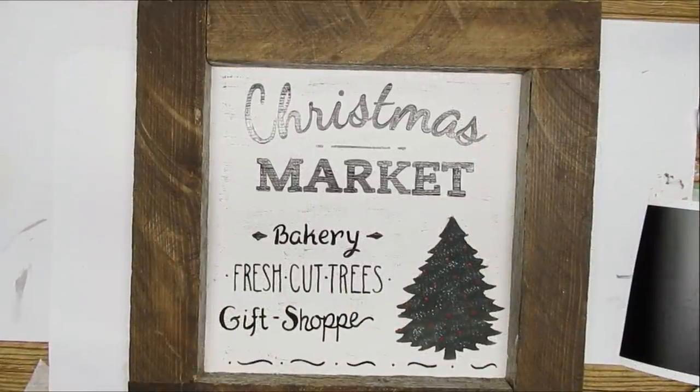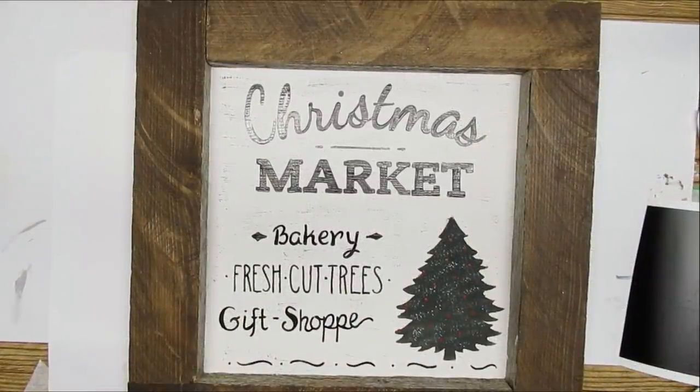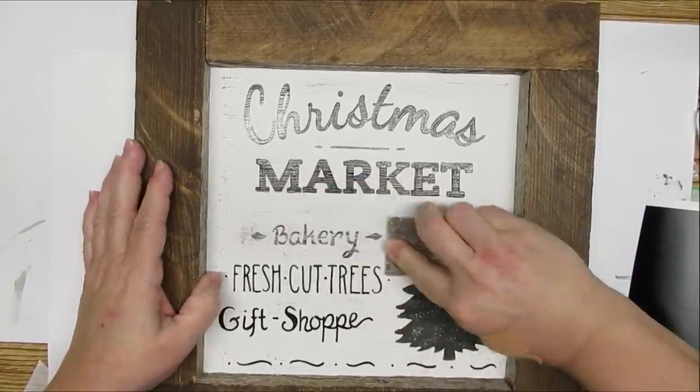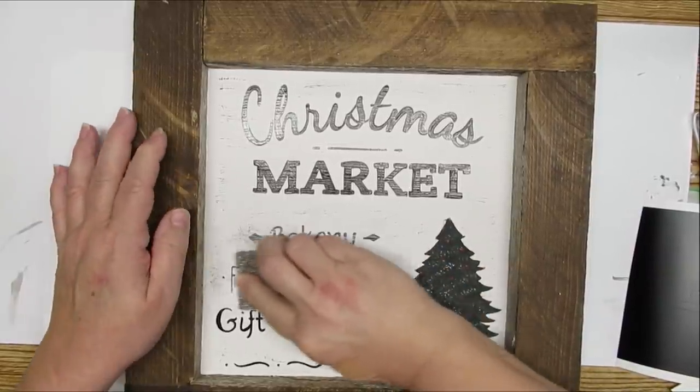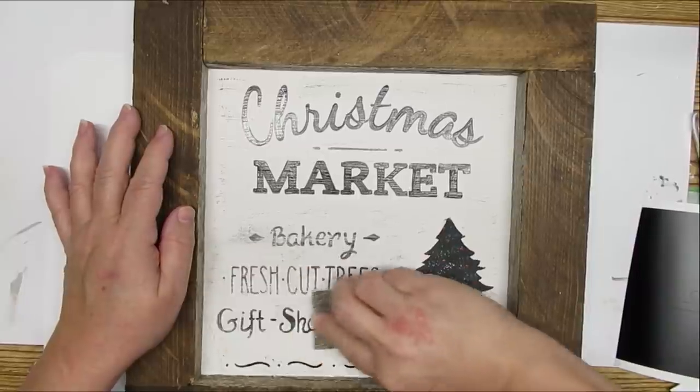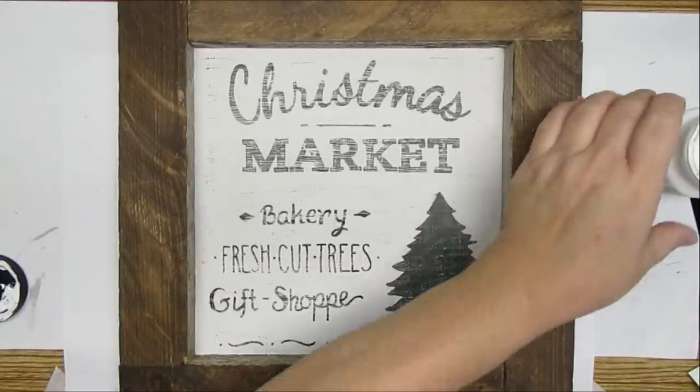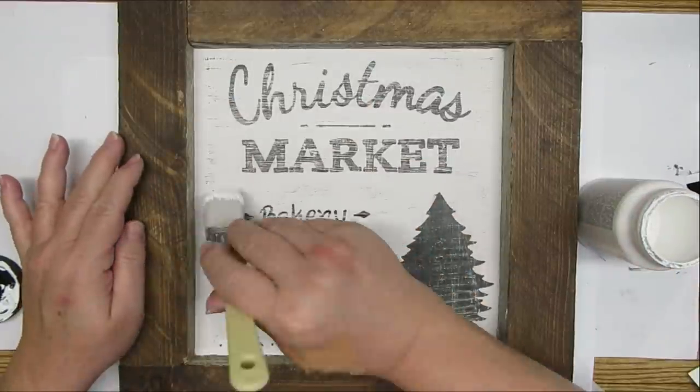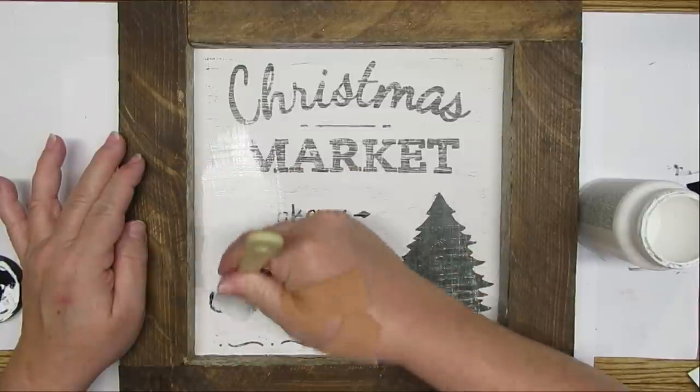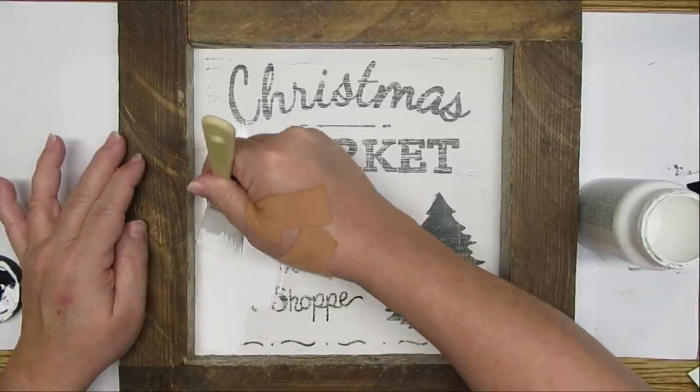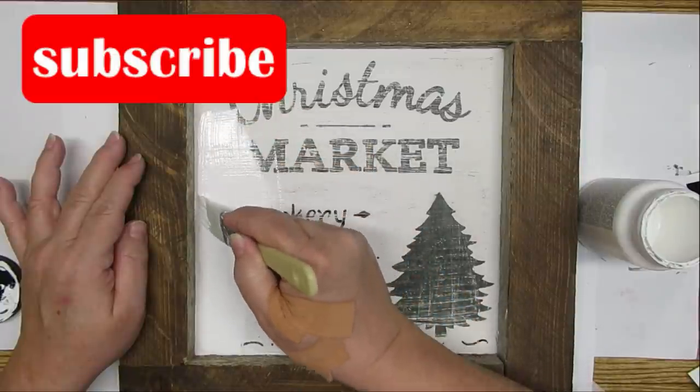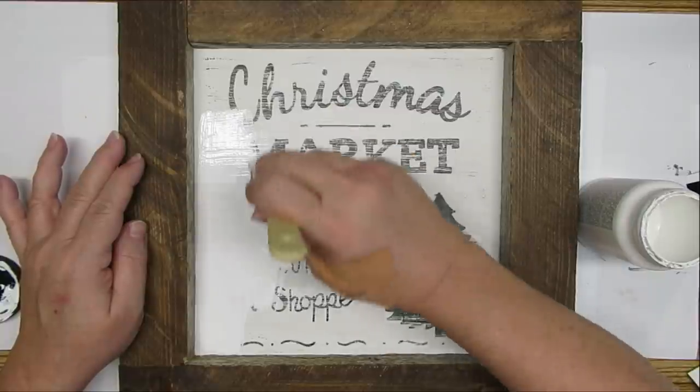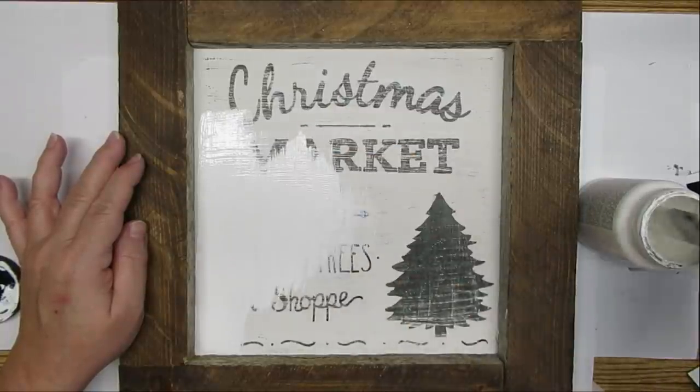The second project I have for you is repurposing this Christmas sign that I made before the holidays. I didn't really like how it turned out so I'm going to take some sandpaper and go over the ink and the paint just to smooth it out. I'm going to give it two coats of white Adirondack Folk Art Home Decor Chalk Paint and the way I'm going to do it is I'm going to do brush strokes up and down for the first coat and the second coat I'm going to do the brush strokes across and that's going to help really camouflage any of the lettering that might show through or any of the black paint.